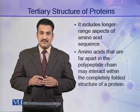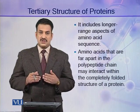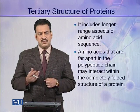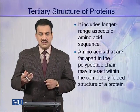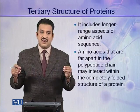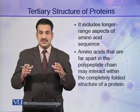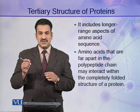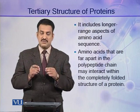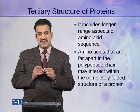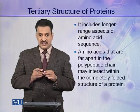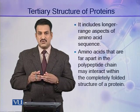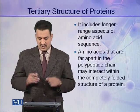For example, if a protein contains a cysteine amino acid at position 5, the second cysteine amino acid may be present at position 90 — so they are very far from each other. But when the polypeptide folds into its tertiary structure, cysteine number 90 may come close to cysteine number 5, and they both may interact and form a disulfide linkage. In this way, weak interactions and covalent interactions are made between quite far amino acid residues.